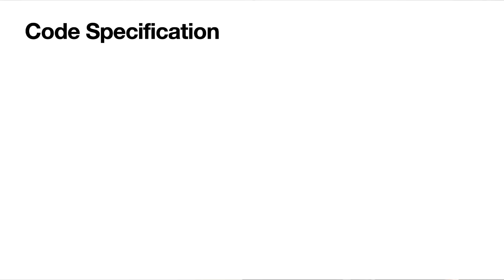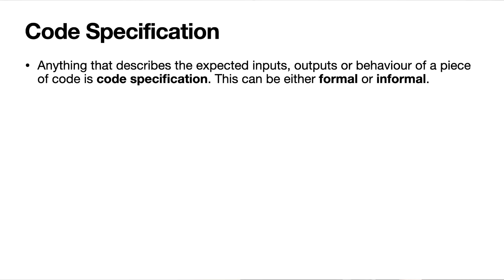We've mentioned code specification, and I just wanted to talk a little about what that is. Anytime we describe how we expect code to behave, we are performing code specification — whether we're writing it, sharing it, or reading it. Code specification comes in two flavors: it can be formal or informal.